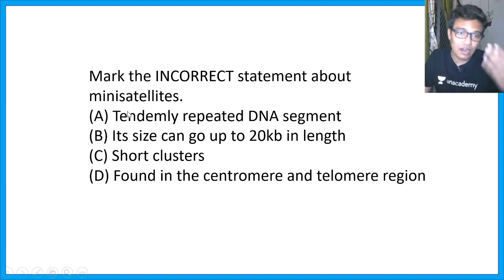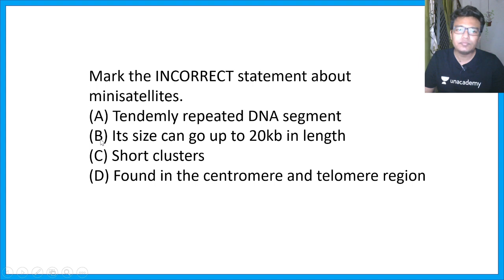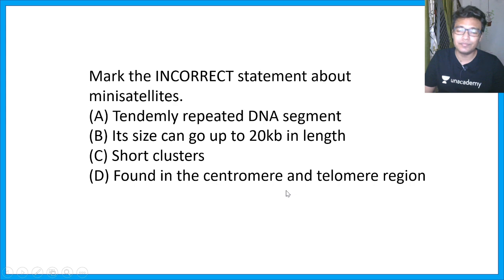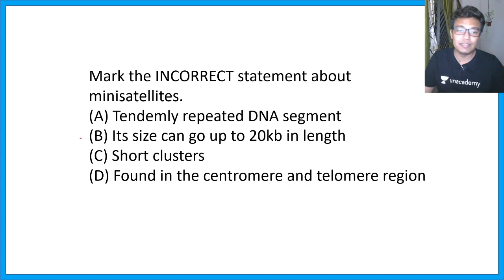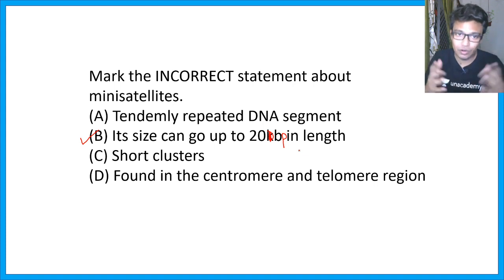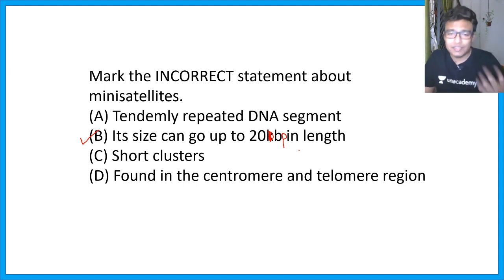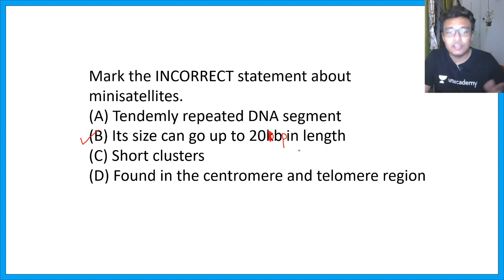The statements about mini-satellites are: Option A — tandemly repeated DNA segment. Option B — its size can go up to 20 kilobase pairs in length. Option C — these are short clusters. Option D — these are found in telomere and centromeric regions. The wrong statement is Option B. Mini-satellites do not go up to kilobase pairs; they go up to 20 base pairs maximum. So the size estimation is wrong. They are palindromic, repetitive sequences.